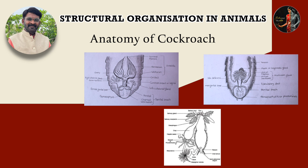Sensory organs are very important. These include the antennae, maxillary palp, labial palp, and anal cerci. These are all sensory organs. The compound eyes are situated on the dorsal surface. Each eye consists of 2,000 hexagonal facets.